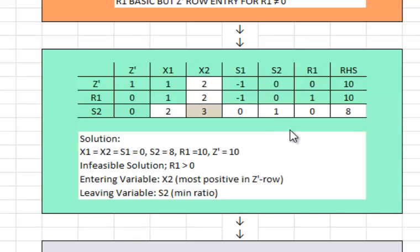This is a minimization problem again. We are going to be looking at the most positive value in here which is under X2 and that is 2. We will be setting up the mean ratios. In this case, 10 over 2 and 8 over 3. 8 over 3 is smaller value. So, S2 is our leaving variable.